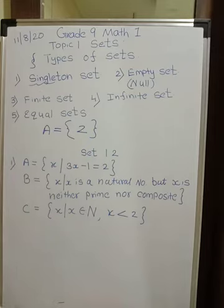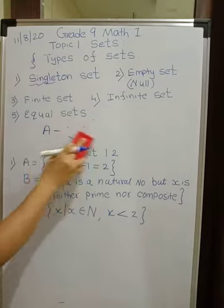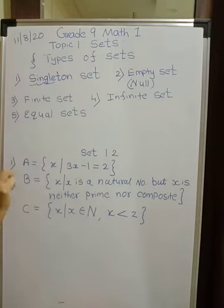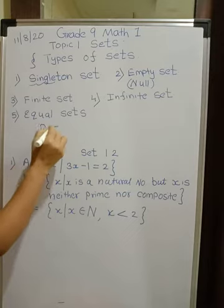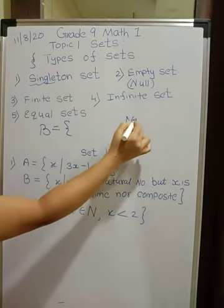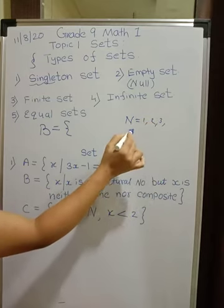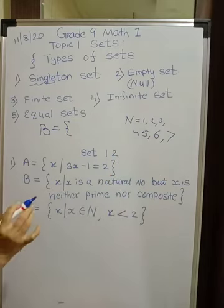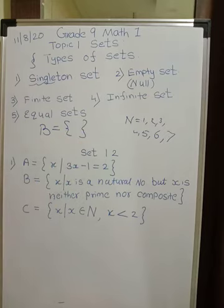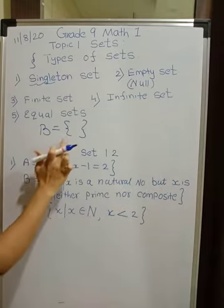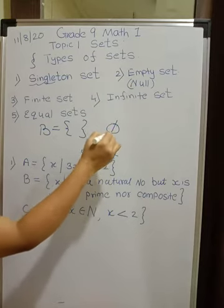Empty set means nothing is there in that set. Please note that 0 is also an element, so if 0 is there then it is not an empty set. For example, if B is a set of natural numbers between 6 and 7 — natural numbers are 1, 2, 3 and so on — between 6 and 7 there is nothing, so it is empty. We write the empty set with nothing inside, and this type of set is called an empty set or null set, denoted by the symbol phi.